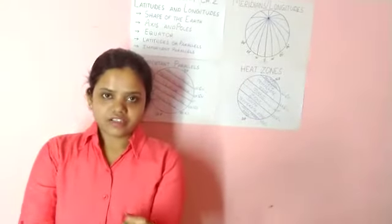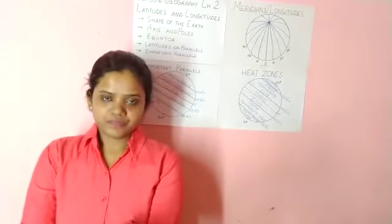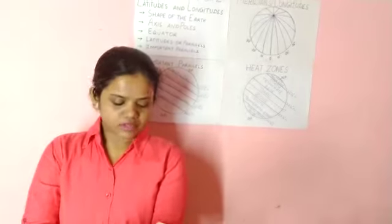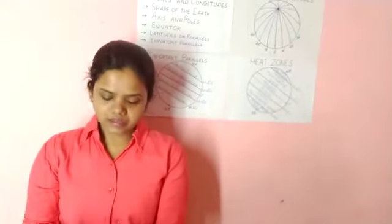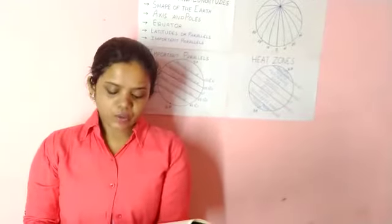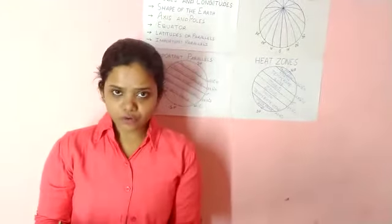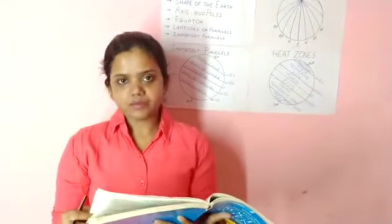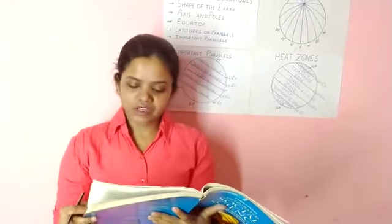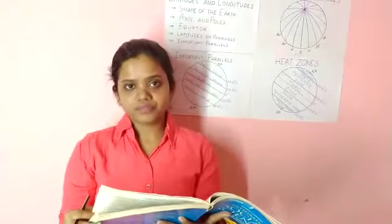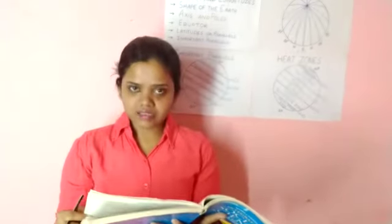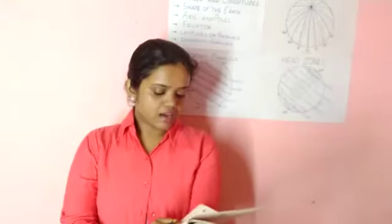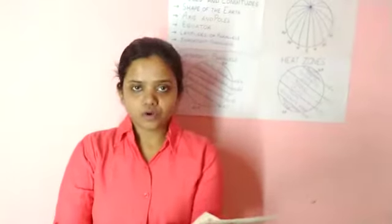Now we will discuss question answers. You have to do three short notes. Number one is equator. The answer is: we can divide the earth into two equal parts by drawing an imaginary line midway between the north pole and the south pole. This line is a circle and we call it the equator.